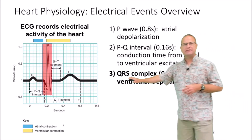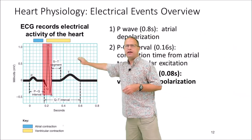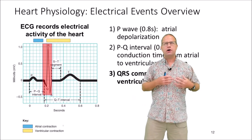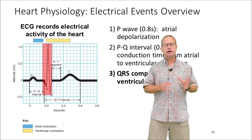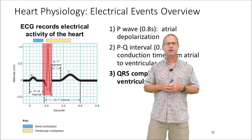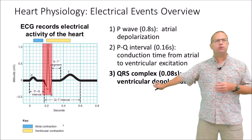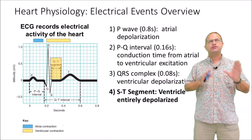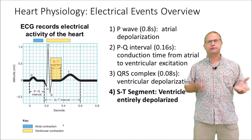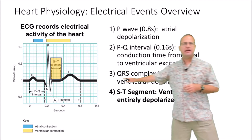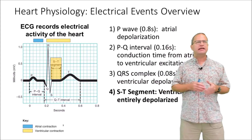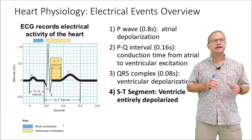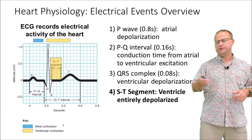Then we have our QRS complex — a very diagnostic and easy-to-recognize wave. This indicates ventricular depolarization as that charge travels from our AV node down our left and right bundle branches and then up the Purkinje fibers. You can see it's about two boxes, so again 0.08 seconds. Then we have an ST segment. Segments do not contain a wave whereas intervals do. The ST segment runs from the end of S to the beginning of T and is the period when the ventricles are entirely depolarized — about three boxes or 0.12 seconds.